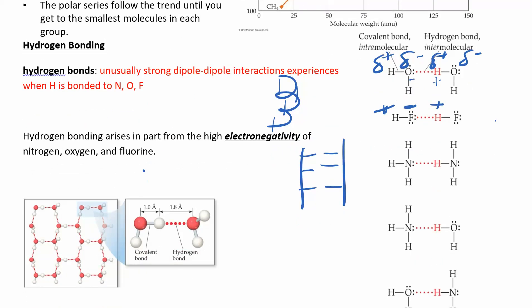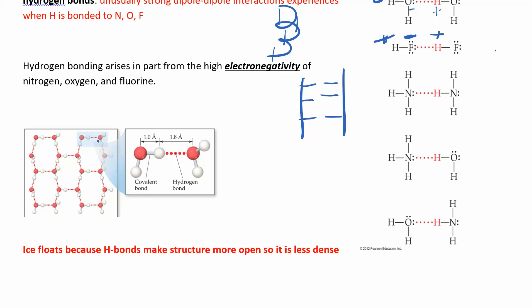Hydrogen bonds also give water its unique solid structure. When you freeze water, it expands to accommodate all these hydrogen bonds, spreading out a little more. As a result, ice floats on the surface of liquid water — the solid floats on the liquid — because hydrogen bonds make the structure more open and less dense. That's unusual but very useful for us.